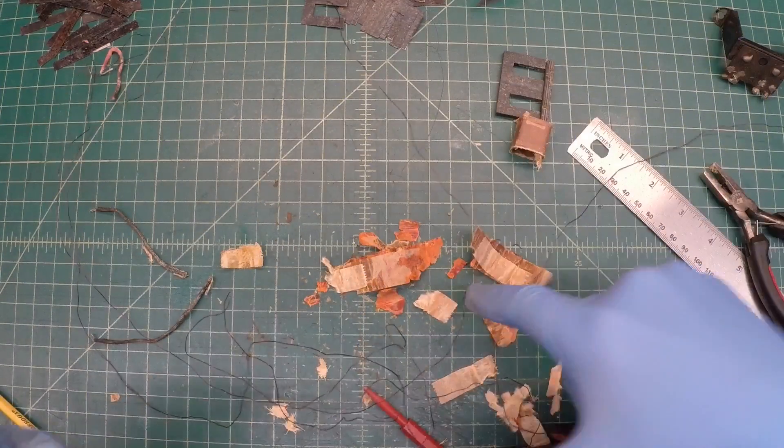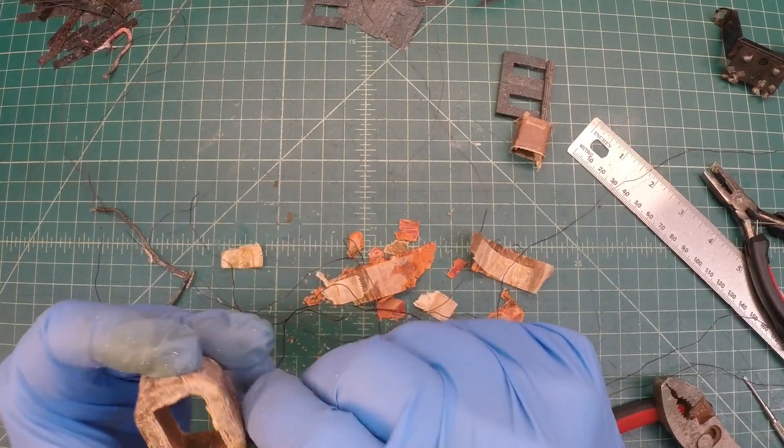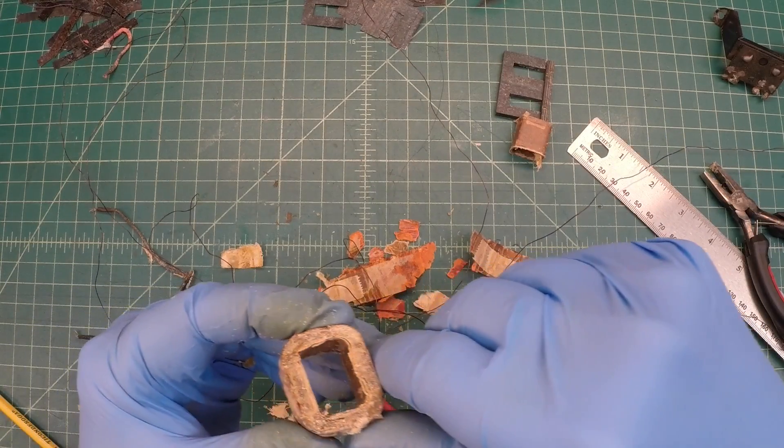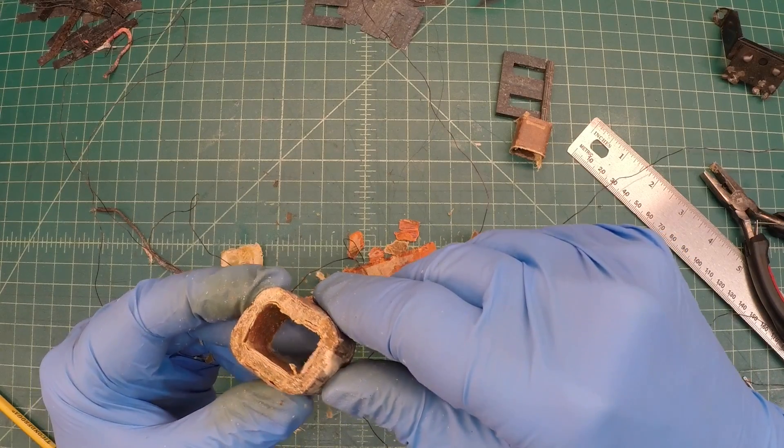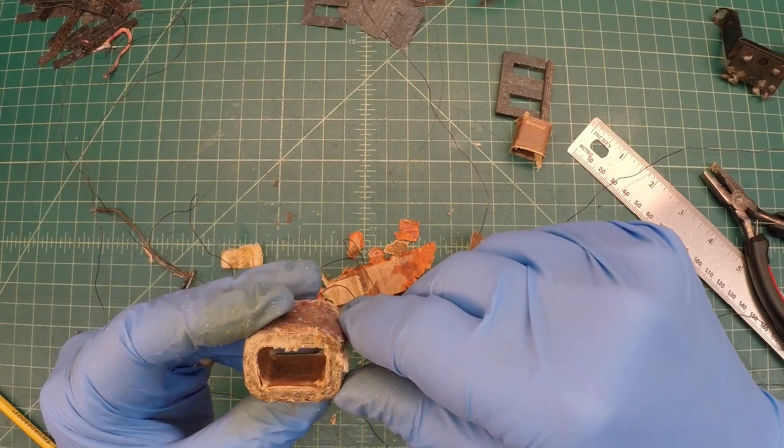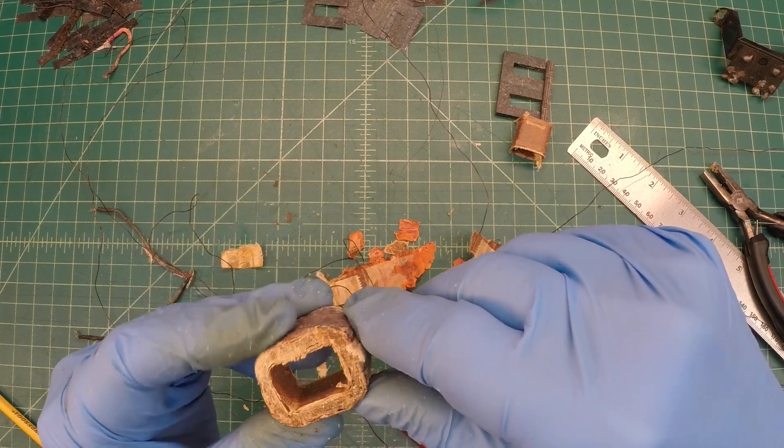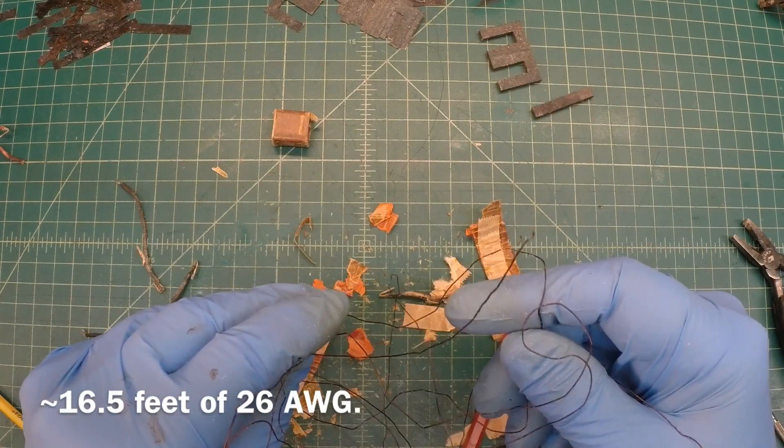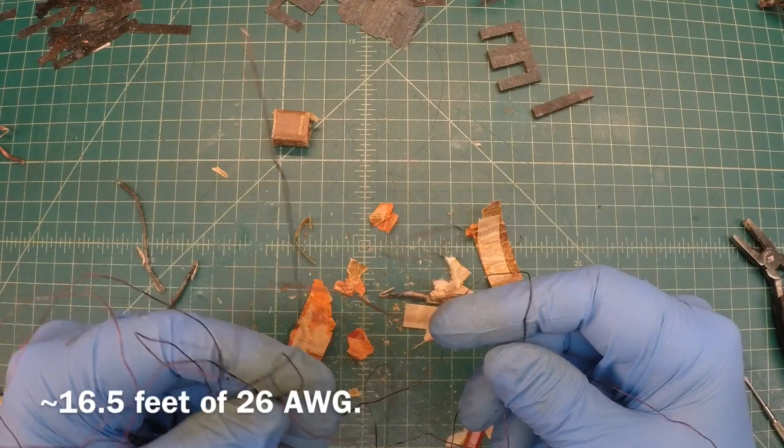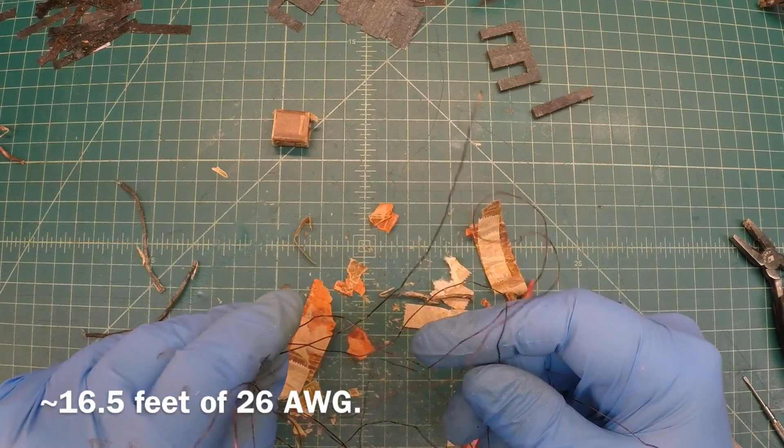All right, the windings kept going and going underneath the tape, so make that a total of 71 and a half. I thought I was to the end when I was at 24 and a half. Let me measure the length of this magnet wire and check the AWG as well.